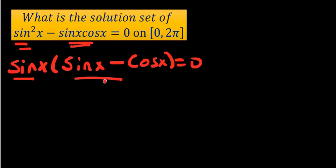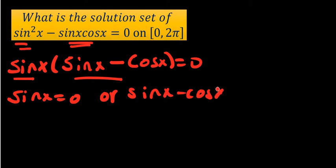Then the product of these two is equal to 0 means we can take either of the two equal to 0. That means sinx = 0 or sinx - cosx = 0. Let us complete this first and then we'll come back to the other one.